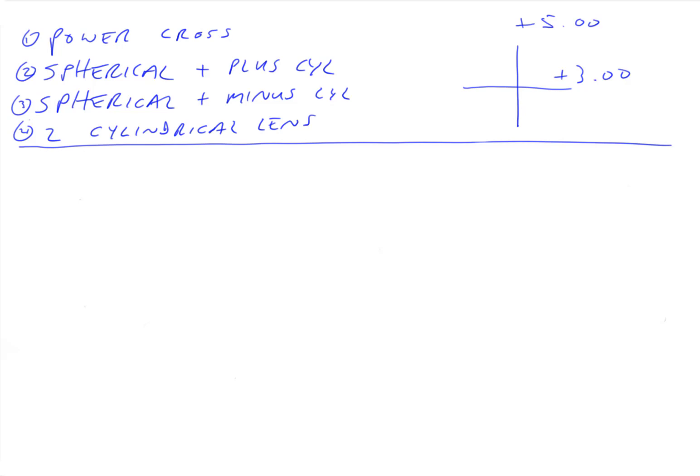Okay, so let's talk about spherical and minus cylinder. You basically understand the concept here. It's just the opposite. So if we want to solve for this one that's written above plus five and plus three here, and we want to use a cylindrical lens minus cylinder and a spherical lens, how do we do it?